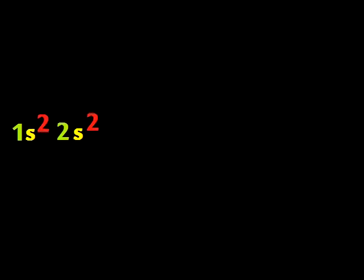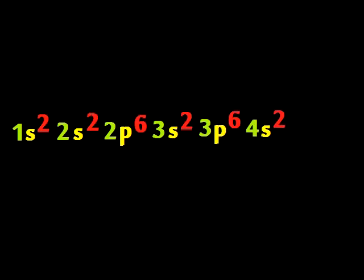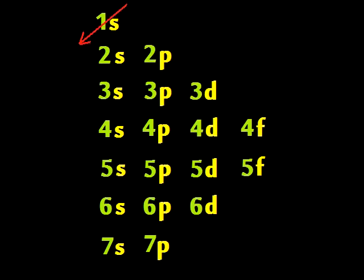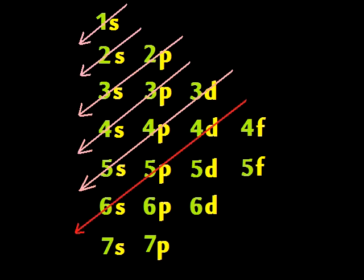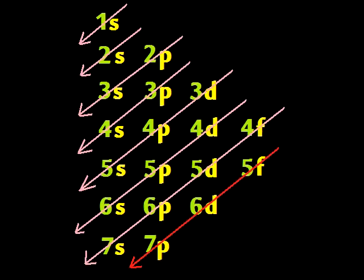1s2, 2s2, 2p6, 3s2, 3p6, 4s2, 3d10. The overlaps increase in frequency — 4f fills up way after 5p. That's weird. Keep track of the overlaps — really cool. You just gotta use the diagonal rule. I love the diagonal rule.